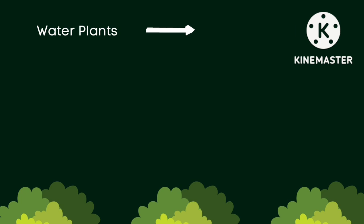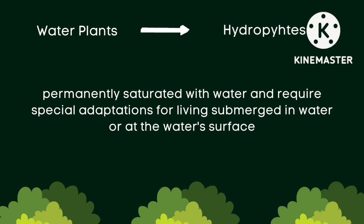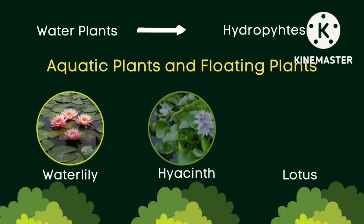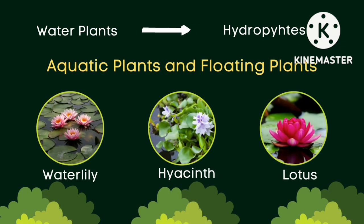Water plants are also called hydrophytes. These plants can only grow in water which is permanently saturated with water and require special adaptations for living submerged in water or at the water surface. Ang water plants ay tinatawag ding hydrophytes. Ito ang mga halaman na nabubuhay o nakatanim sa aquatic environment o matubig na lugar, katulad ng dagat, ilog, lawa, at iba pa. Some examples of aquatic and floating plants are water lily, hyacinth, and lotus.